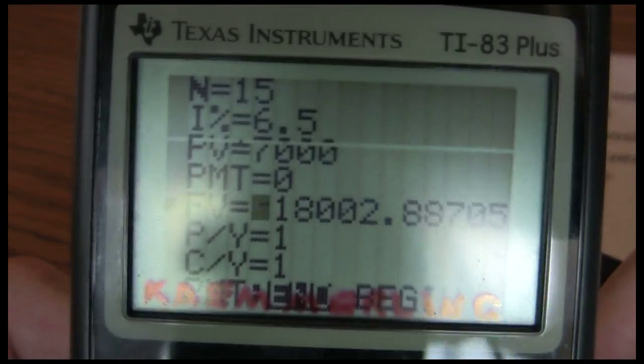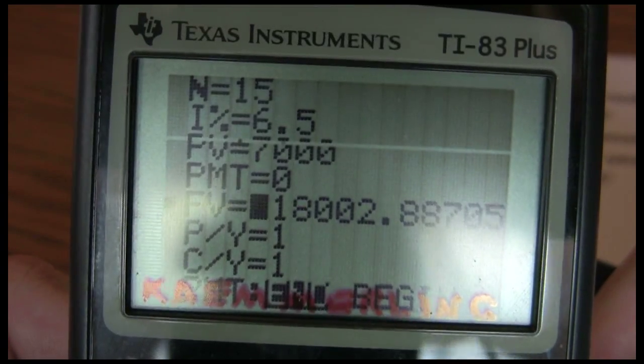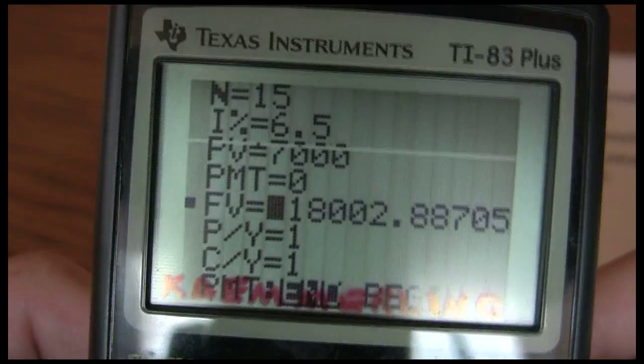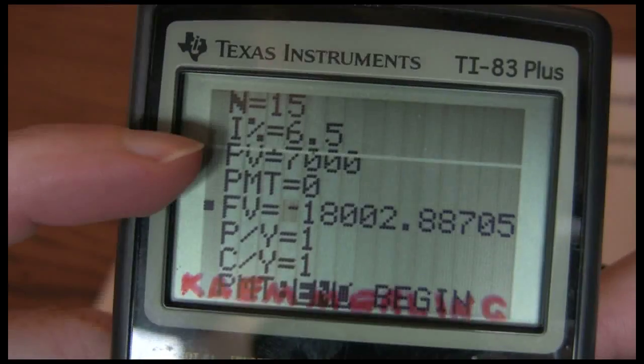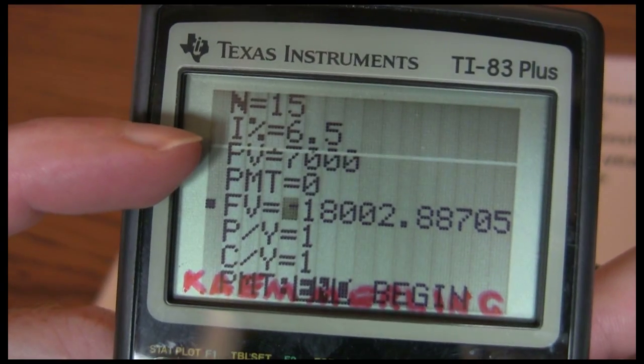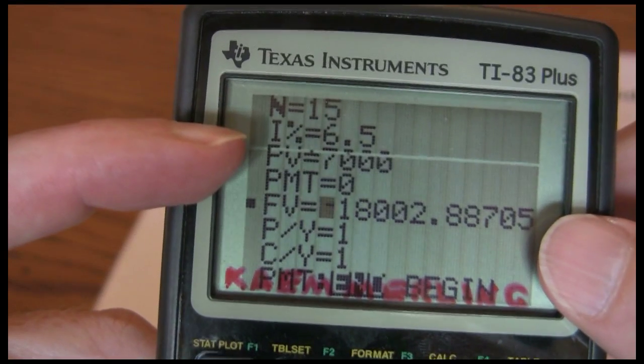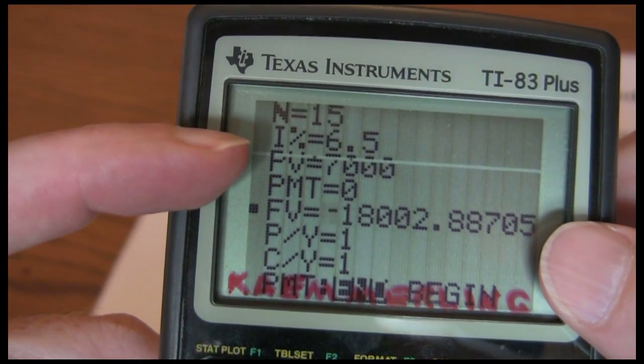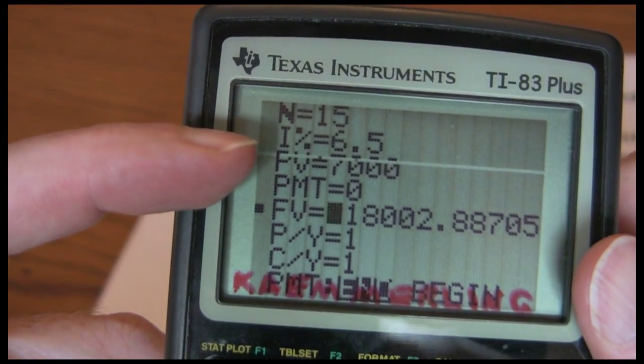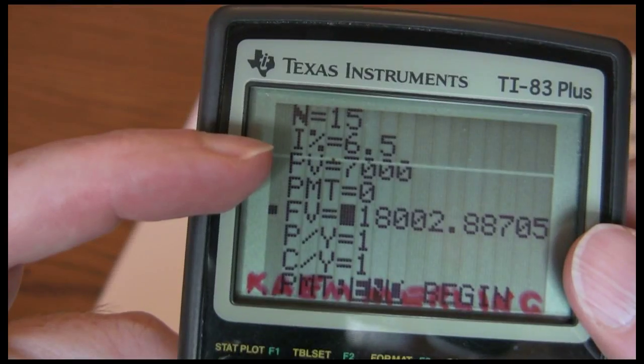Now notice that answer came out as a negative 18,000. The reason for that is we have a positive 7,000. So the calculator is always trying to balance those out. If you're going to get 7,000, you have to give up 18,000 15 years later. If we would have made that 7,000 negative, this answer would have came out positive.